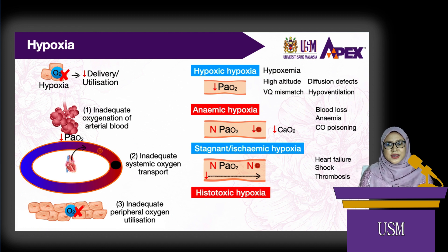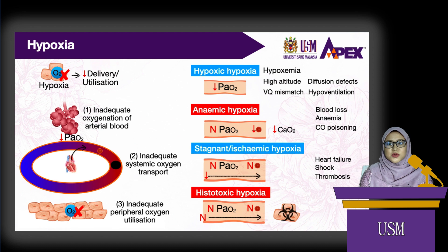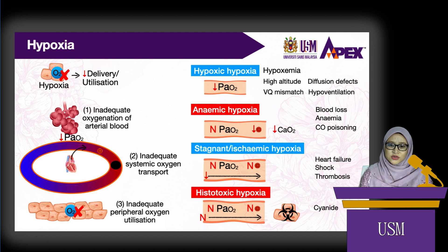In histotoxic hypoxia, the amount of oxygen delivered to a tissue is adequate, but the tissue cells cannot make use of the oxygen because the cells have been poisoned. The most common cause is cyanide poisoning. Cyanide blocks cytochrome oxidase and other cellular enzymes essential for internal respiration.